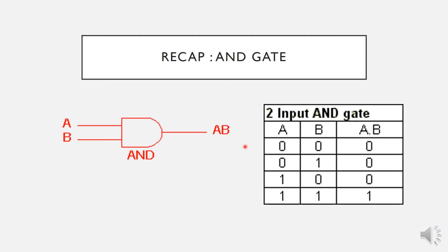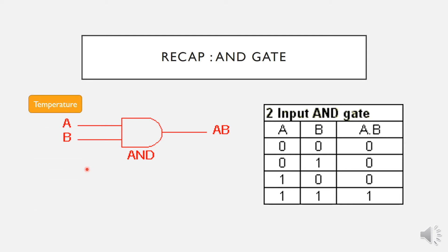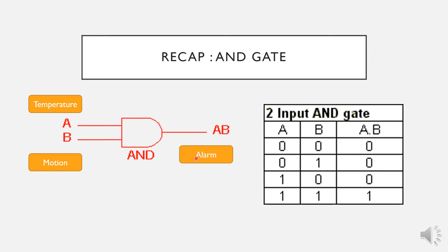For example, we can use these logic gates to represent a security system which has two inputs. The first input can be a temperature sensor and the second input is a motion sensor, so the output will be an alarm. In this case the alarm will sound — become high — if the temperature sensor and the motion sensor both give a high input. This is a simple example of how we can apply logic circuits and use the truth table to define our operation.